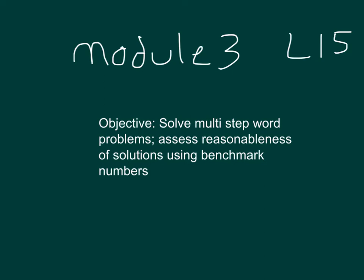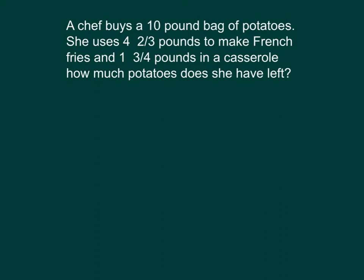Module 3, Lesson 15. A chef buys a ten-pound bag of potatoes. She uses four and two-thirds pounds to make french fries, and one and three-quarters pounds in a casserole. How much potatoes does she have left?